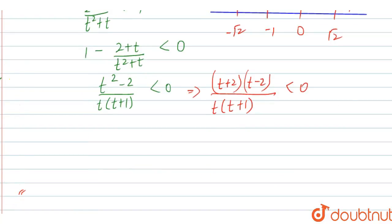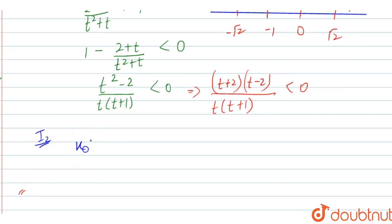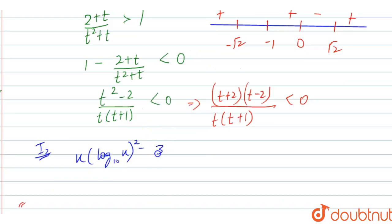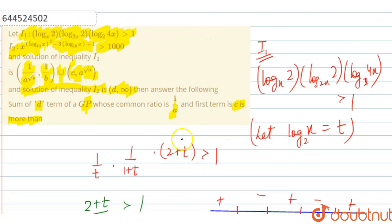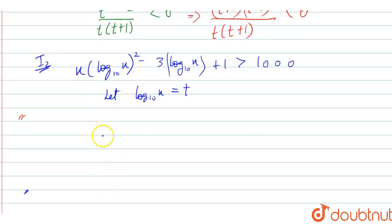Now for I2. Let us write down I2: x raised to the power [(log₁₀x)² − 3·log₁₀x + 1] greater than 1000. So this is our I2.